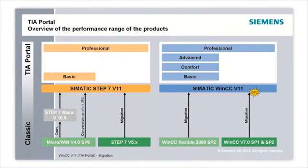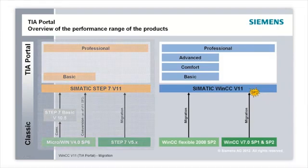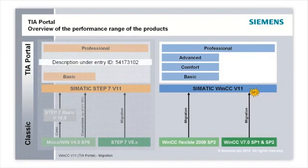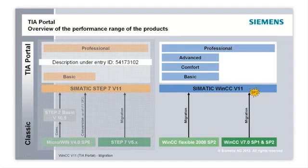Here you see an overview of the performance range of WinCC version 11. The Step 7 world is displayed on the left side and the HMI world on the right side. In this webcast, the HMI world will be introduced. A webcast on the Step 7 world can be viewed under Entry ID 54173102. A separate webcast on the topic of WinCC version 7.0 migration to WinCC version 11 is also available.